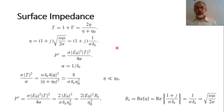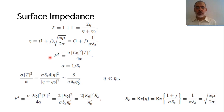In the previous video, we studied the transmission and reflection due to a conductor in free space. The transmission coefficient is 1 plus γ = 2η/(η + η₀). For a good conductor, η = (1+j)√(ωμ/2σ), which equals (1+j)/(σδs), where σ is conductivity and δs is the skin depth. The transmitted power through the interface from free space to the conductor is σE₀²|T|²/(4α), where α = 1/δs.